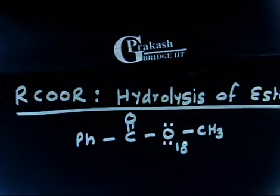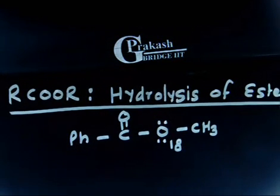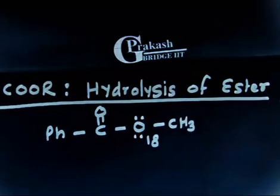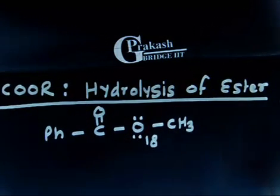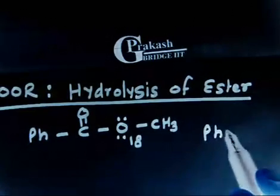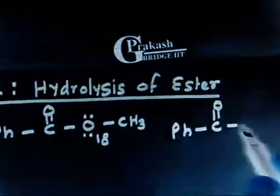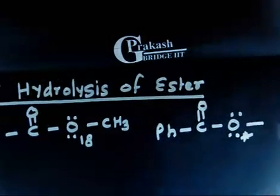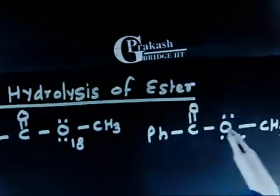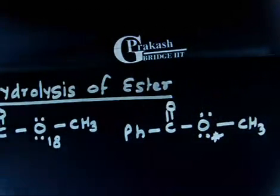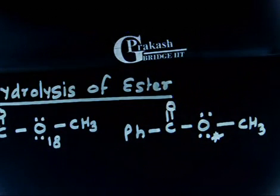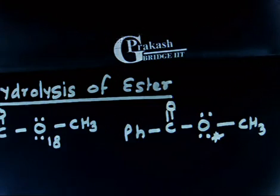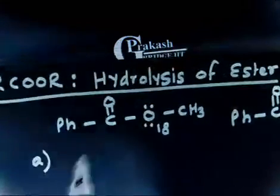This problem is related to hydrolysis of an ester. Here I have an oxygen that is labeled — this is oxygen-18. In some books they simply write a star. So I can write the same molecule as PhC(=O)O* — where the starred oxygen is O-18, not O-16. The first part of the question says: draw the mechanism for saponification of this ester, and use this mechanism to show where the labeled oxygen will appear in the product.